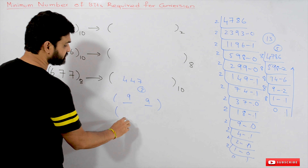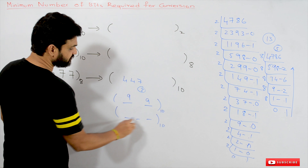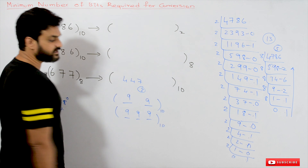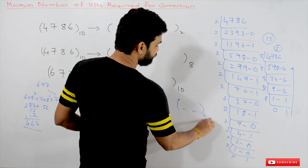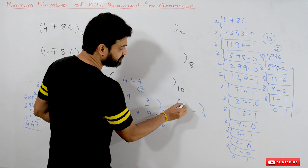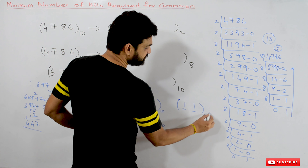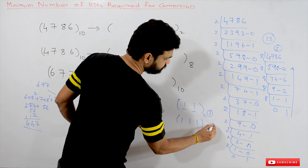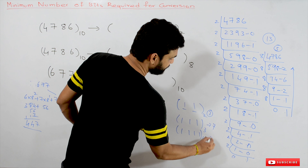The maximum two-digit decimal number is 99. The maximum three-digit decimal number is 999. Similarly, the maximum two-digit binary number is 11, which equals 3. The maximum three-digit binary number is 7. The maximum four-digit binary number is 15.